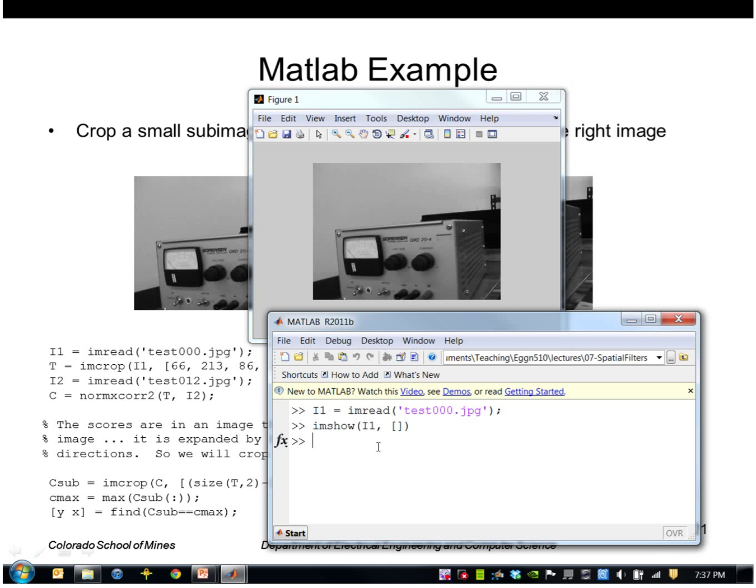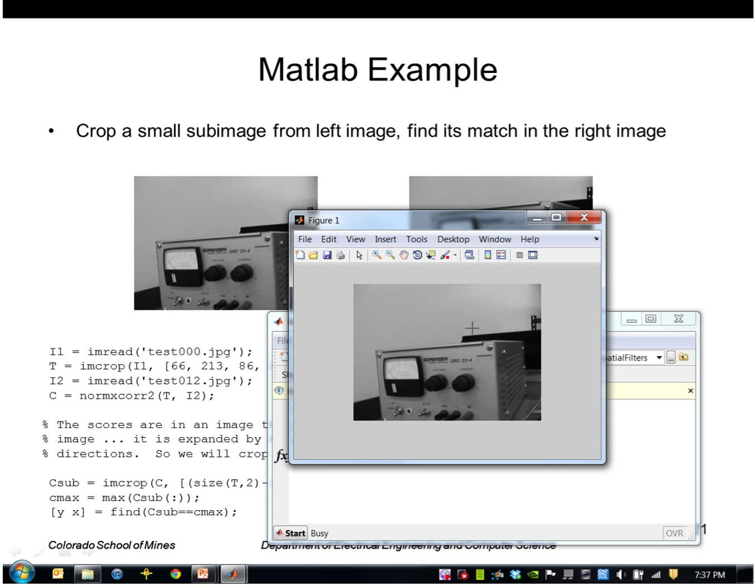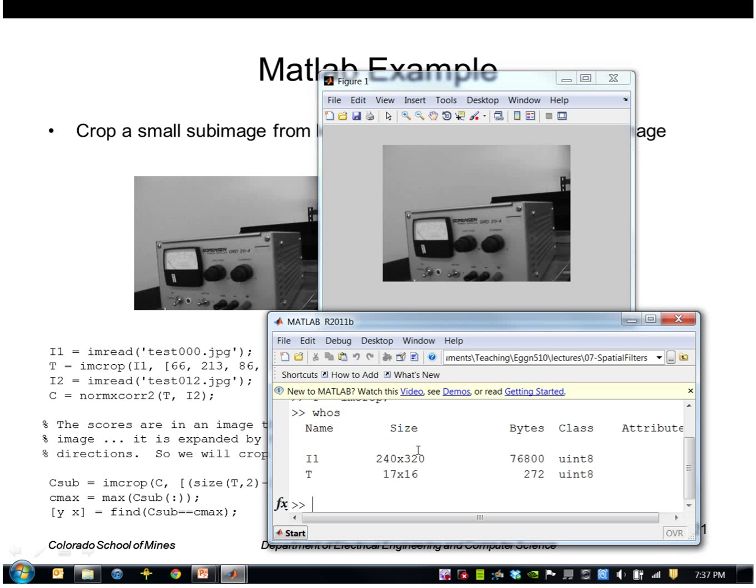So one way to extract a subimage in MATLAB is using the IMCrop function. If I just give it with no parameters, it lets me interactively select a region with the mouse. So I'll just draw a region around this little bolt here, and that generated a little template image of 17 by 16.